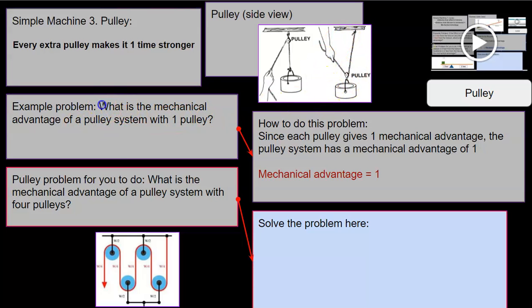Let's read this example problem. What is the mechanical advantage of a pulley system with one pulley? Well, that's very simple. It's one. Because if it has one pulley, it's one. Every pulley makes it one time stronger. If it had two pulleys, it'd be two, three, three, and so on and so forth.